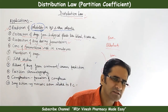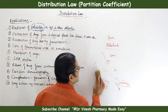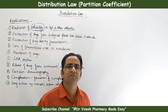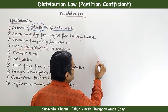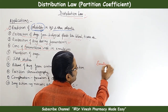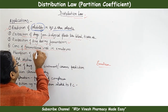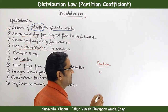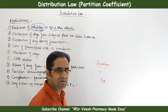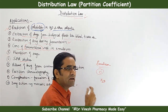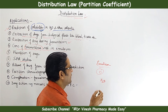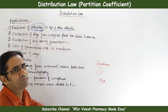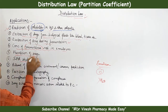Concentration of preservatives required in emulsions: Preservatives are substances added in small amounts to inhibit or kill microbial growth and prevent formulation spoilage. In an emulsion, microbes grow in the aqueous phase. If a preservative is only oil-soluble, it will not protect the aqueous phase. Distribution law helps determine how much preservative will be present in each phase and whether it is sufficient for protection.